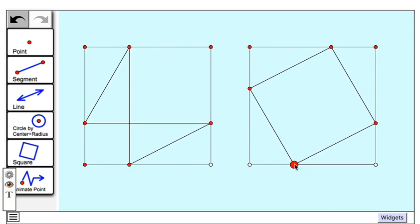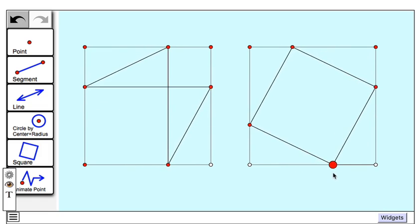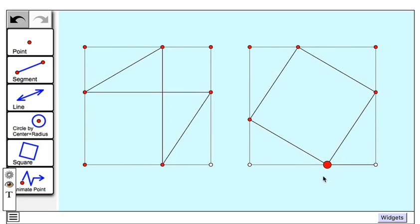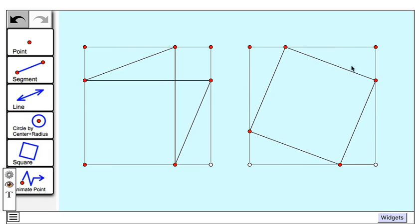So now when I drag this point, we see that these images move together in unison. And my four right triangles on the right and the four on the left are all congruent.